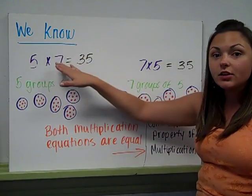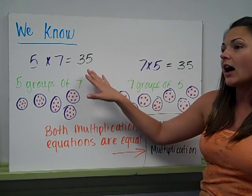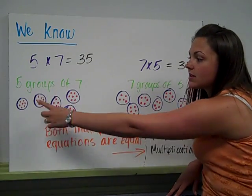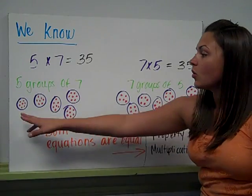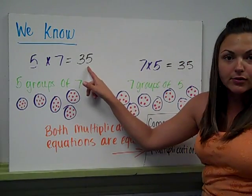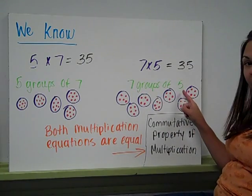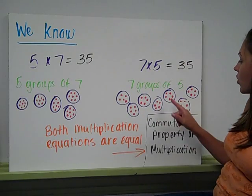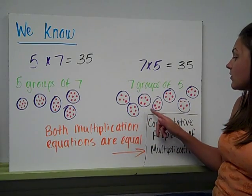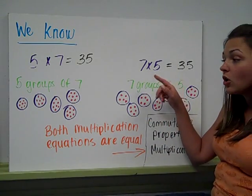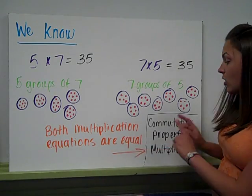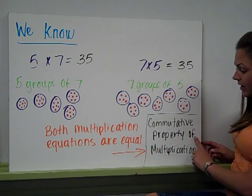Some things that you already might know are that 5 times 7 equals 35, as well as 7 times 5 equals 35. This is five groups of seven. As you can see here, I have five purple circles with seven pink circles inside each one. If I count all them up, it's going to give me 35. Over here, I have seven groups of five. So I have seven big purple circles, and in each circle, I have five pink dots. If I was to count each one of these up, it would still give me 35, which shows me that both multiplication equations are equal, which leads us to the commutative property of multiplication.